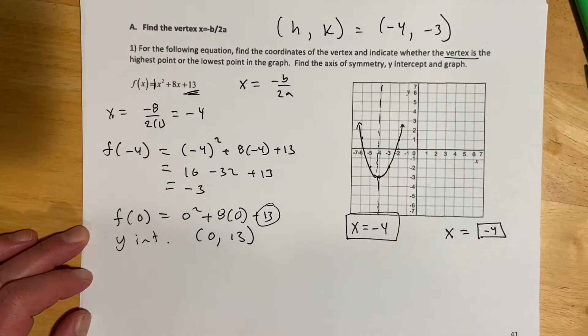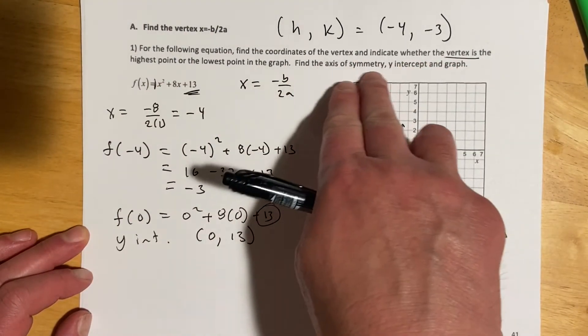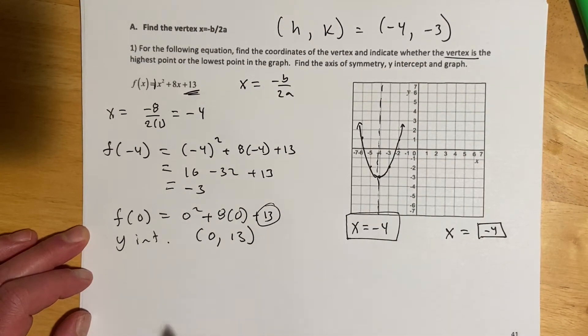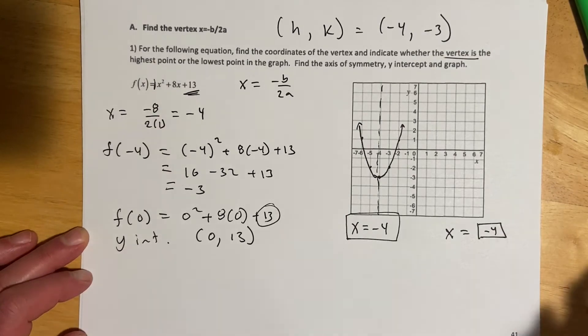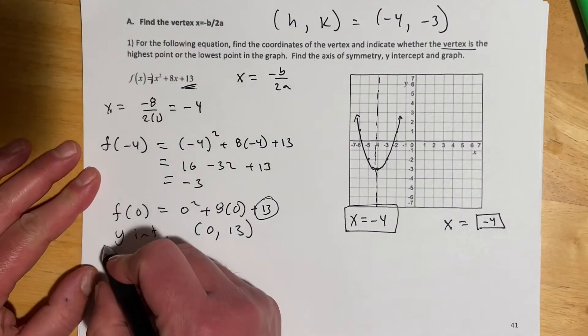So your y-intercept for this one is at 0 and then 13. And then for this one, we did not have to find the x-intercept. Excellent. I'm just looking at my notes and going, okay, sweet. We don't have to do it this time. We will in a second. But so for this example, that would be it.